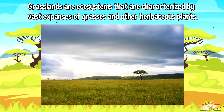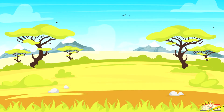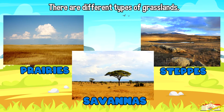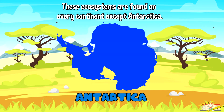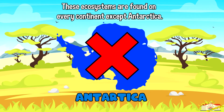There are different types of grasslands, including prairies, savannas, and steppes. These ecosystems are found on every continent except Antarctica.